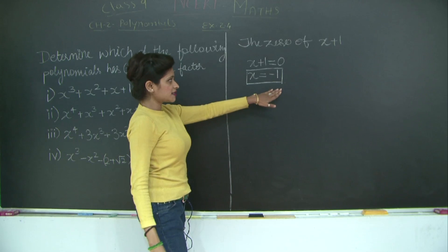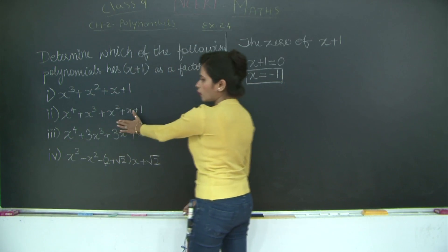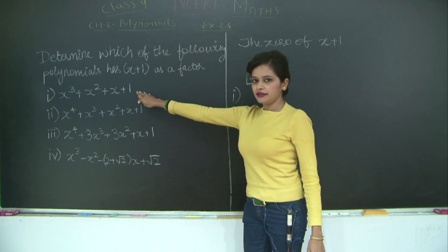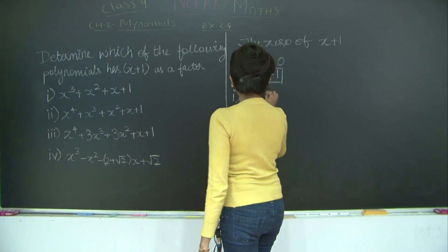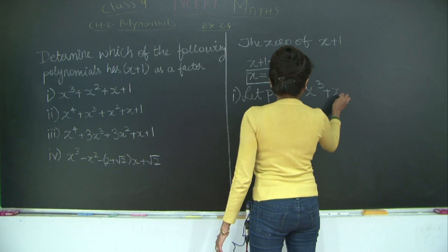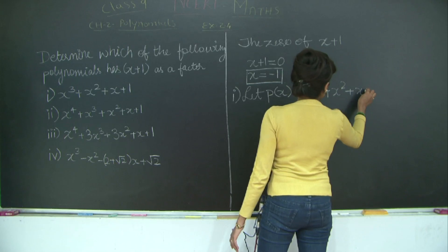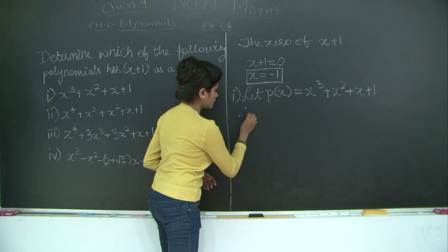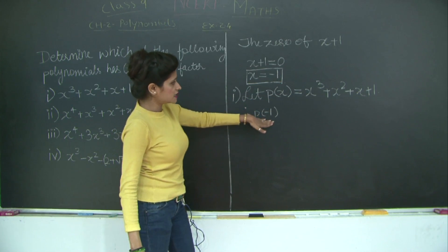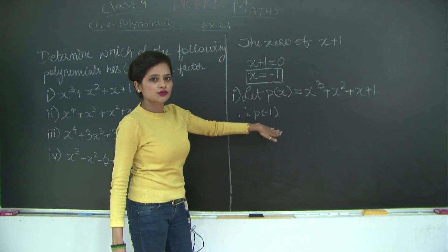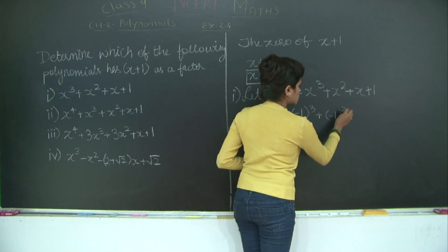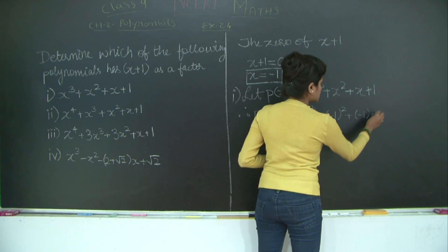The zero of x plus 1 is x equals minus 1. So I am going to substitute x equals minus 1 in each of the following polynomials. Let p(x) be the first polynomial, equal to x cubed plus x squared plus x plus 1. Therefore, p of minus 1 means substituting minus 1 everywhere we have x. This gives us: minus 1 cubed plus minus 1 squared plus minus 1 plus 1.